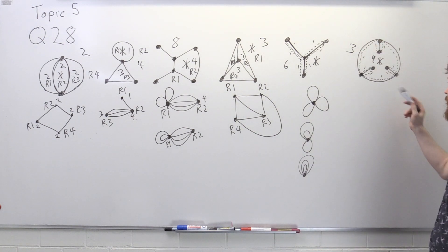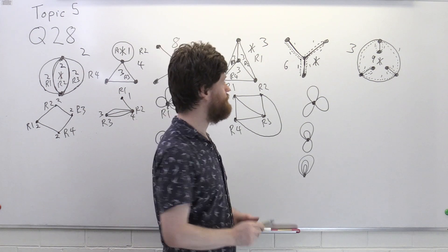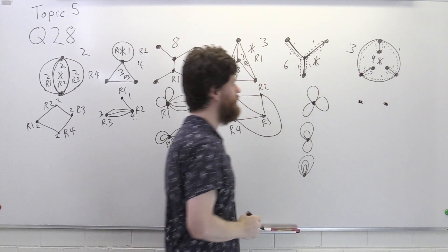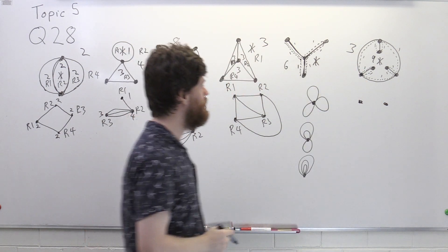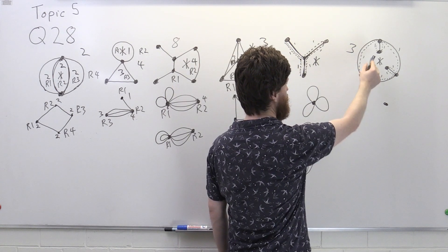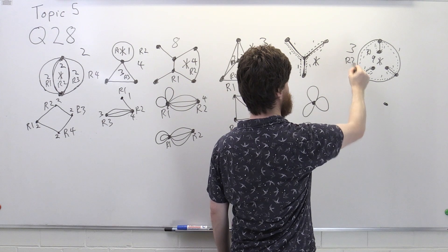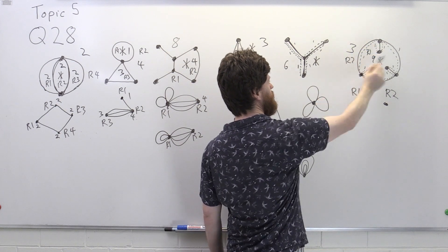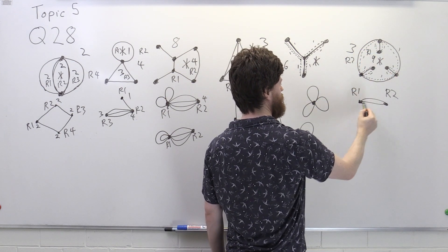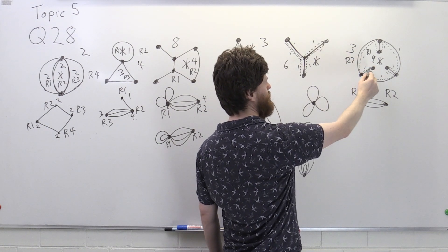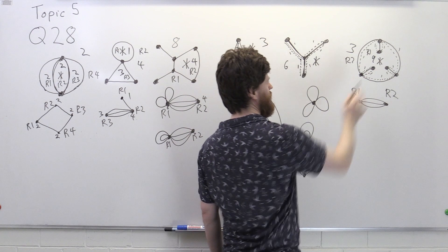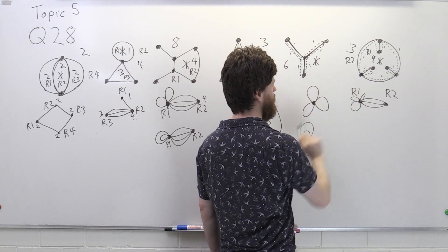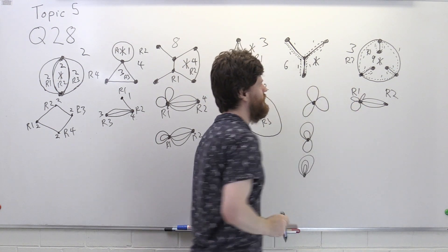For the final graph, there are two regions so we have two vertices. The internal region r1 is connected to the external region by three edges, so we draw three connections between the two vertices. Additionally, r1 is separated from itself by the internal dangly edges, so we draw three loops on r1. This gives the correct degrees for each vertex as expected.